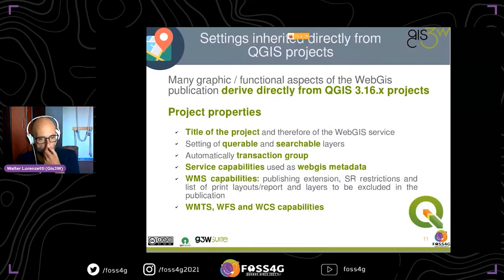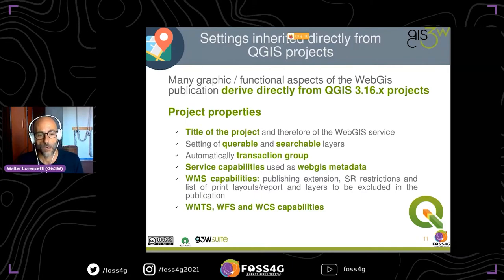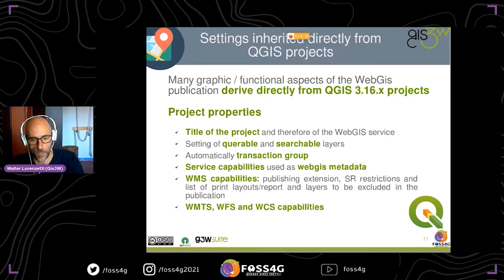You can publish QGIS projects, manage published web GIS services, and activate specific functional modules and assign them to individual web services or individual users. When a user uploads a project inside G3W Admin, the web GIS service inherits several features from the QGIS project — for example the title, settings for queryable and searchable layers on every layer of the project, automatic transaction groups, service capabilities used as web GIS metadata, and the WMS capabilities.